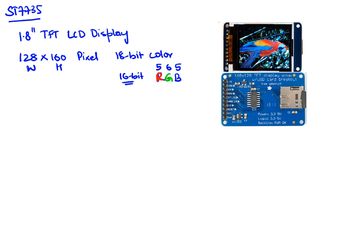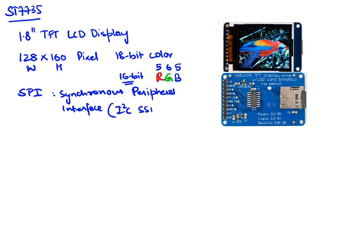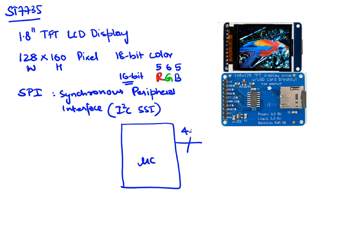The next thing to know about our display is that it uses an SPI interface. SPI stands for synchronous peripheral interface. This goes by many names — I²C is one name, SSI is another — but the bottom line for us is that we will be using multiple pins to connect this to our microcontroller. The actual protocol itself is a four or five wire protocol that we are going to use.